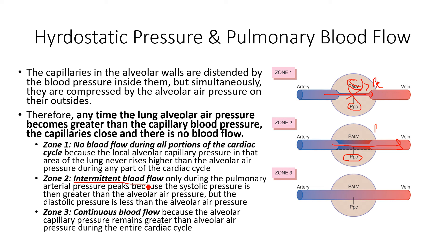In zone three perfusion, there is continuous blood flow because the pulmonary capillary pressure is always greater than the alveolar pressure. We're able to have blood flow constantly through the pulmonary capillary, entering back into the pulmonary veins and into the left ventricle. This allows for constant exchange of gas throughout the cardiac cycle, and we see this at the bases due to that hydrostatic pressure difference.